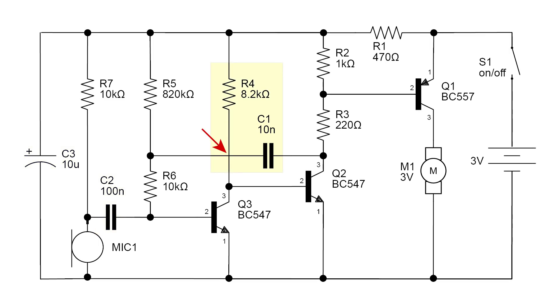Notice how there is not a dot where C1 crosses R4. That means they do not connect. There is also a 3 volt motor and a microphone.